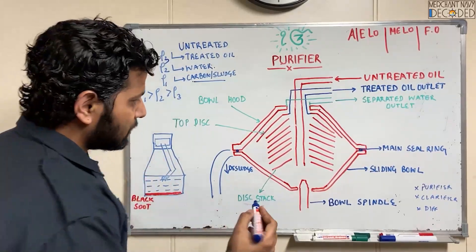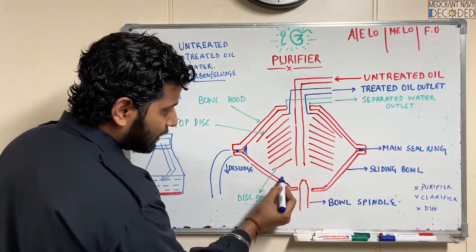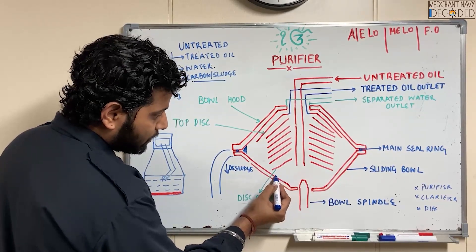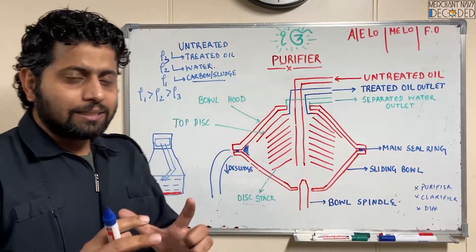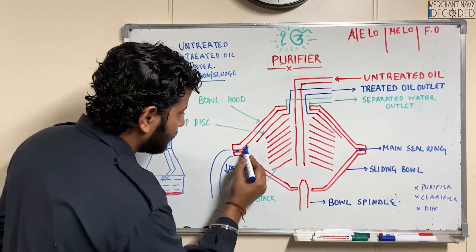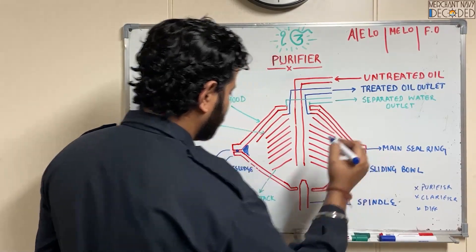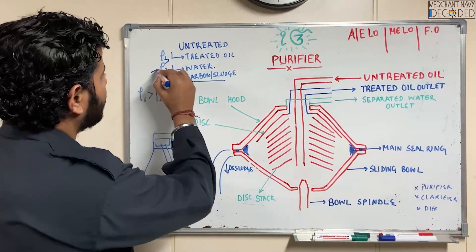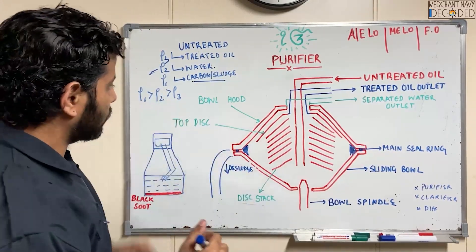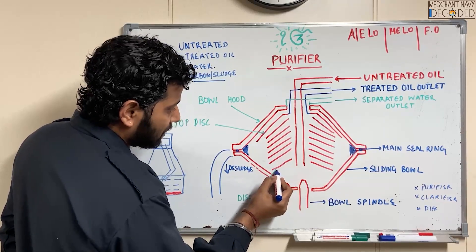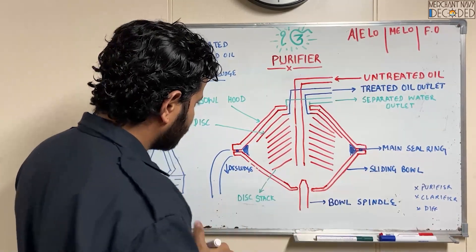So the heavier components will be the first ones to go outwards, sliding upwards, and they will block the outer area. Since carbon and soot are not in huge quantity, this outer area will be taken by heavy sludge, soot, and carbon deposits. Then the second-largest centrifugal force will act on the water molecules. So when oil and water come in, the water molecules will be the second to move outward and take the next region.